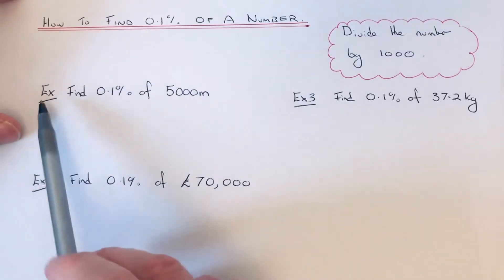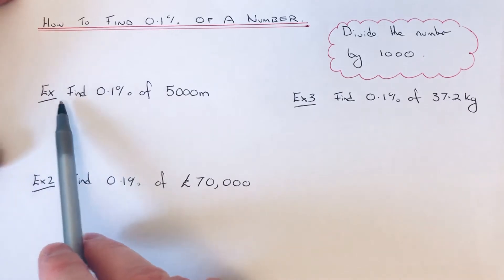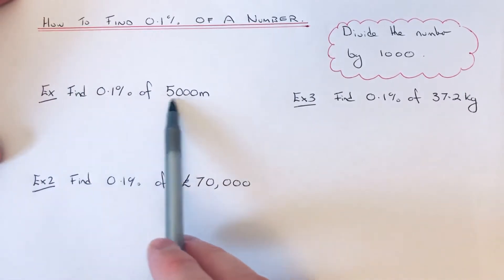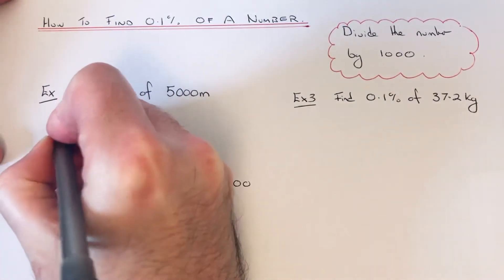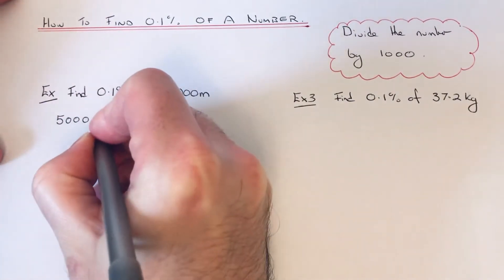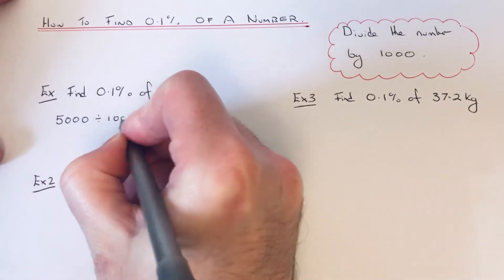Let's have a look at the three examples. The first one is to work out 0.1% of 5,000 metres. All we need to do is divide 5,000 by 1,000.